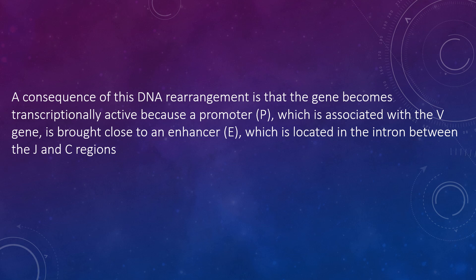The resulting mRNA has the L, V, J, and C exons present. The mRNA is translated in the cytoplasm, and the leader is removed as the protein is transported into the lumen of the endoplasmic reticulum. The light chain is assembled with the heavy chain in the endoplasmic reticulum, and the immunoglobulin is secreted via the normal route of secretory proteins. The V-region of the mature light chain is coded for by sequences of the V-gene and J-region, and the C-region by sequences of the C-gene.